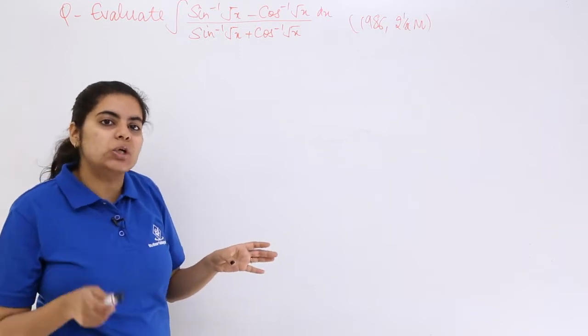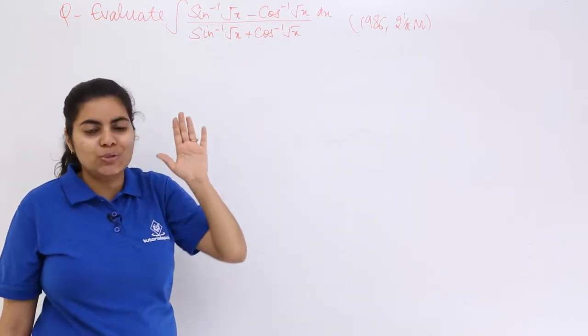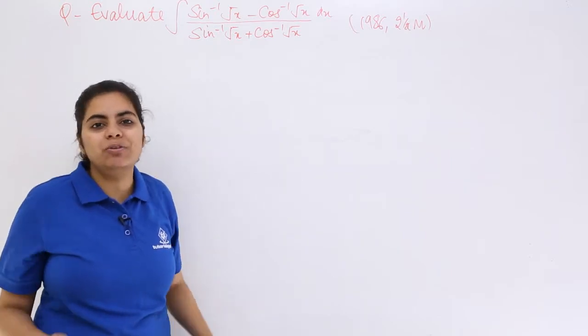Now you know sin inverse theta plus cos inverse theta equals π/2, so the denominator is sorted. There is no problem with it. What about the numerator?